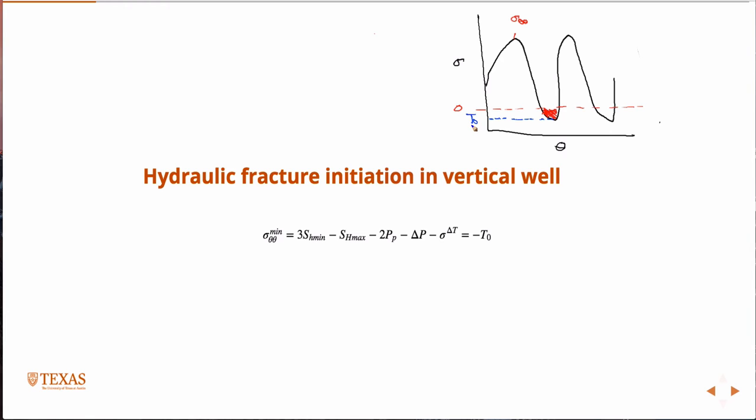The point at which a fracture will initiate in tension is equal to T0. This is the solution of the Kirsch equation at the wellbore wall for the minimum value of sigma theta theta. If the full Kirsch equation solution has this oscillatory nature as a function of theta, when you minimize theta, you get this equation. This has a temperature term which we may or may not include.